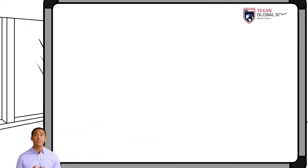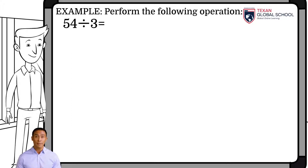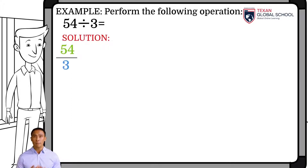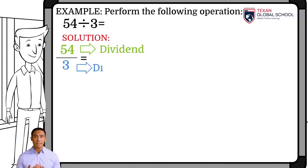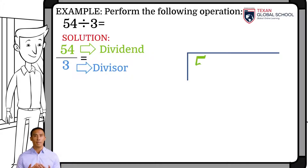Let us perform the division of 54 by 3 in this first example. Recall that this expression can be represented as 54 thirds. Thus, we can identify the dividend and divisor. Then, draw the galley and place the dividend 54 inside the galley and the divisor 3 outside.